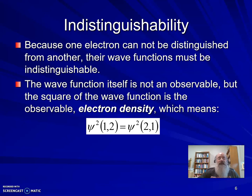What that means is that the square of the wave function that deals with two electrons has to be the same as the square of the wave function that deals with those two electrons in the opposite order. There are two ways that can happen.